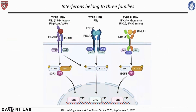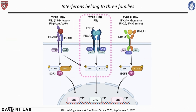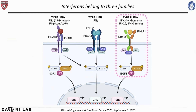Interferons belong to three major families. Type 1 interferons are well known for their antiviral roles, represented by a dozen interferon alphas, interferon beta, and other members. Type 2 interferons are represented by interferon gamma, known for antibacterial and antiviral functions. Type 3 interferons — also called interferon lambdas — were more recently described and include lambda 1, 2, 3, and 4 in humans, with lambda 4 being a pseudogene in a large portion of the population. In mice, only lambda 2 and lambda 3 exist.